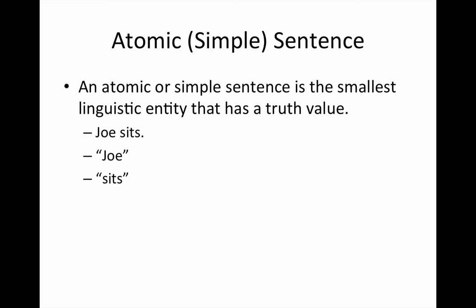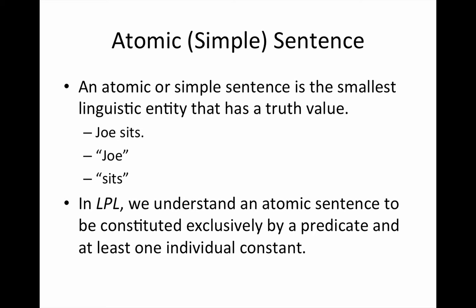So to have an atomic sentence, you need a subject and a verb. In language, proof, and logic, we understand an atomic sentence to be constituted exclusively by a predicate and at least one individual constant. We'll talk about that in just a moment.